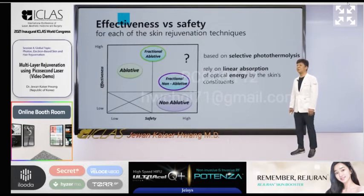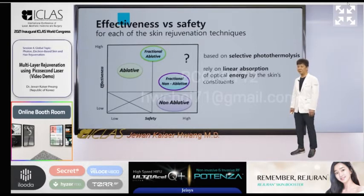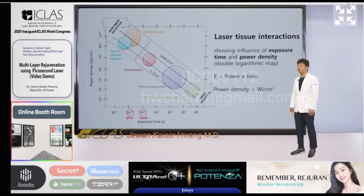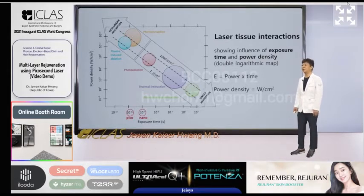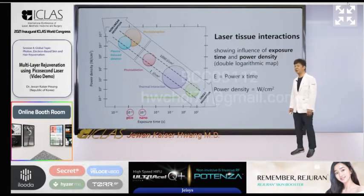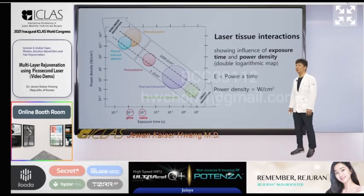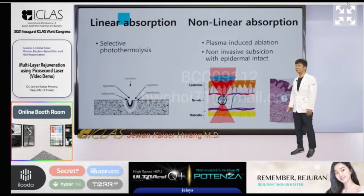These modes of operation are not a matter of which is absolutely good or bad, but which is more important between effectiveness and safety. This laser-tissue interaction occurs due to the relationship between pulse duration and power density. In nanosecond or picosecond laser, plasma-induced ablation or photo-disruption may occur due to non-linear absorption at high power density. Linear absorption is the domain of selective photothermolysis, and non-linear absorption is the domain of LIOB or LITB.